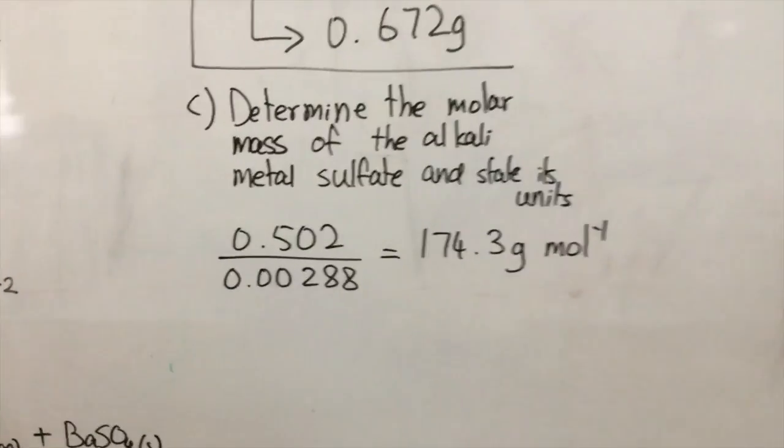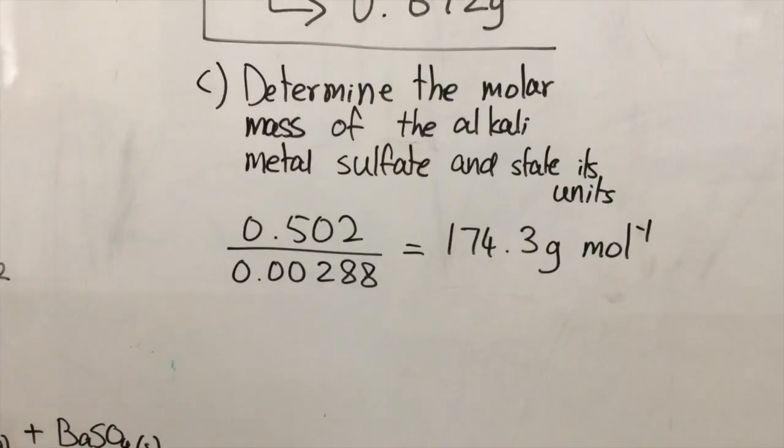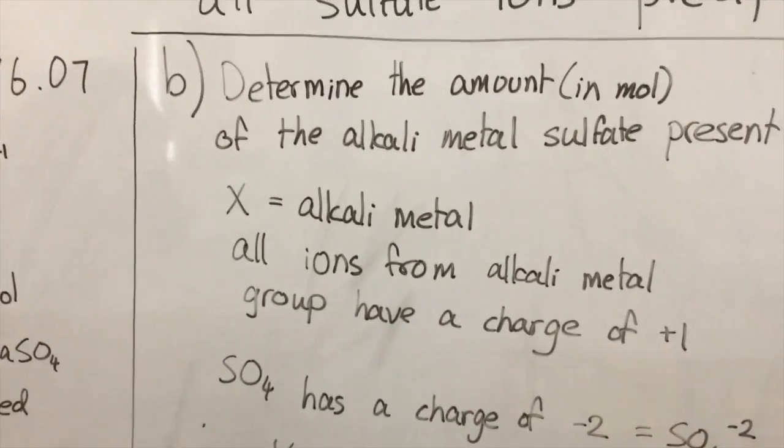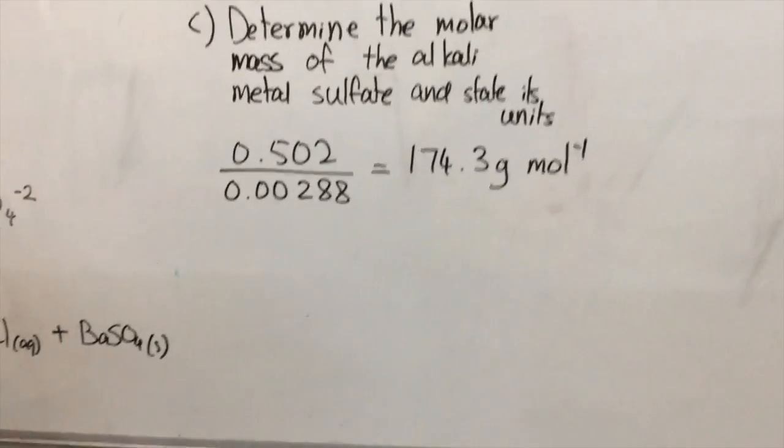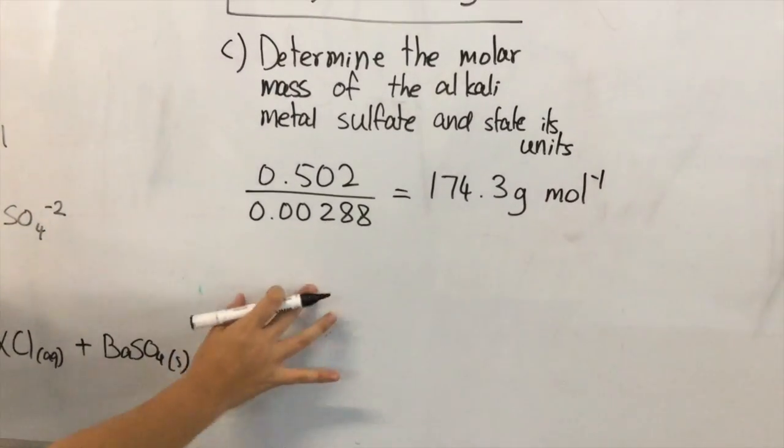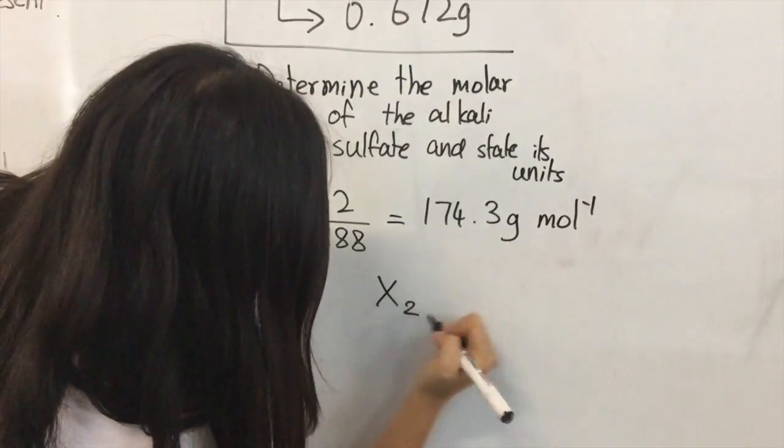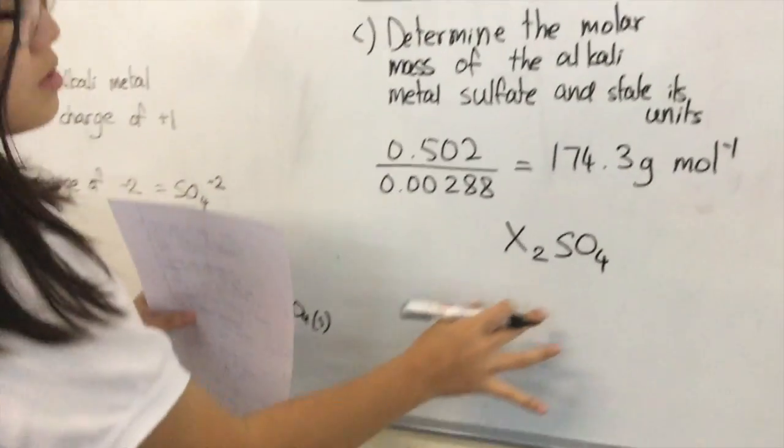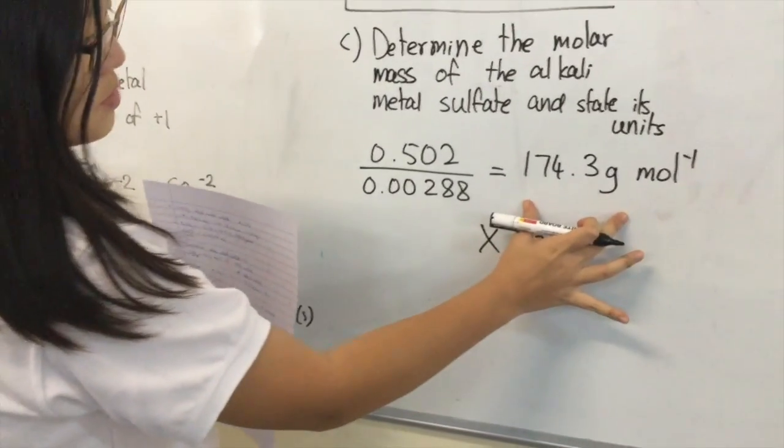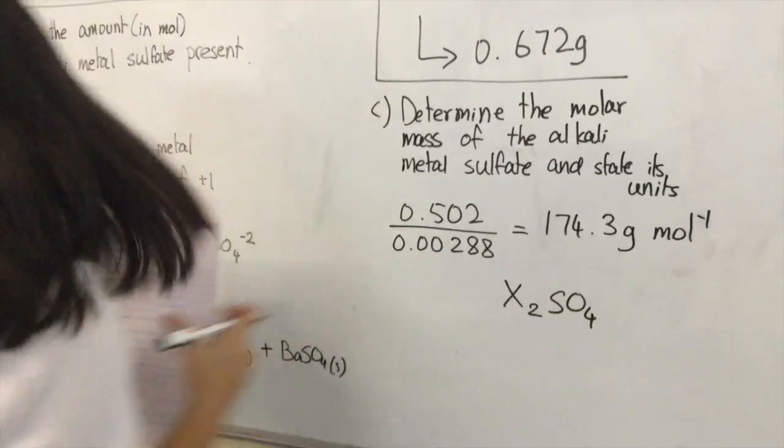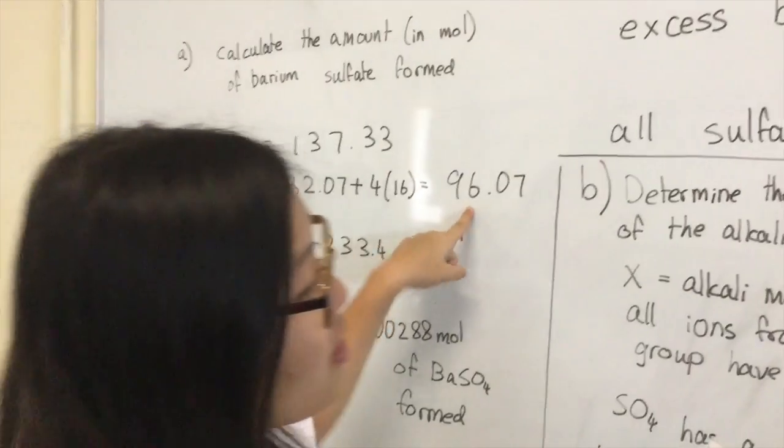We have the molar mass of the whole sulfate, but how can we determine the identity of the alkaline metal X? To find the alkaline metal, you have to subtract SO4. The formula is X2SO4. The molar mass is 174.3. So to find X2, we can subtract SO4 from here, what we already calculated.